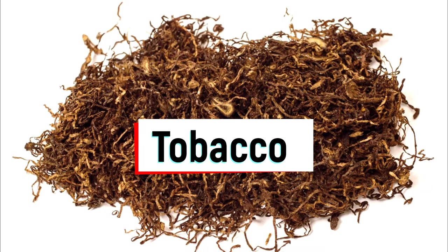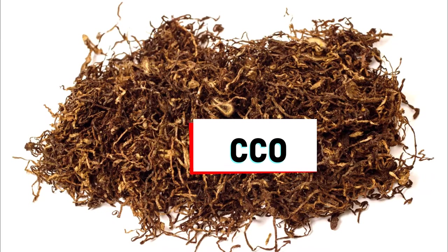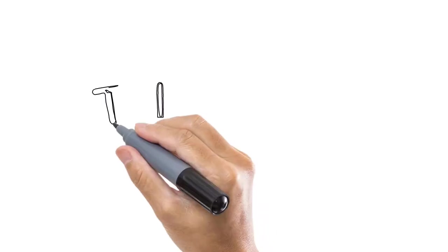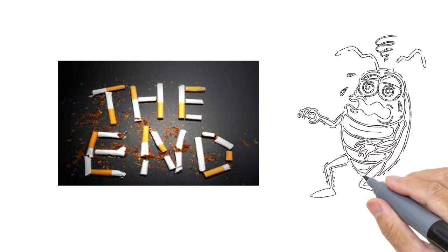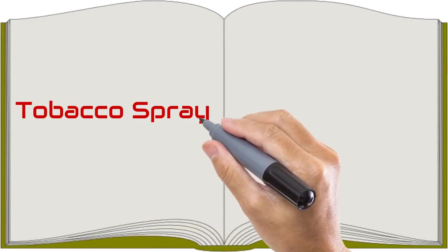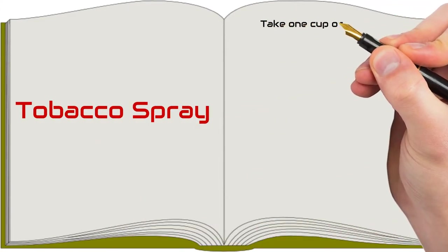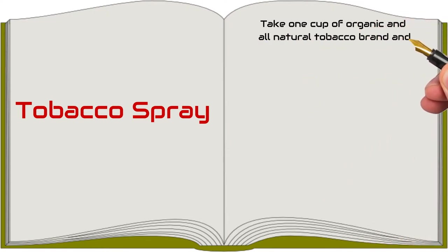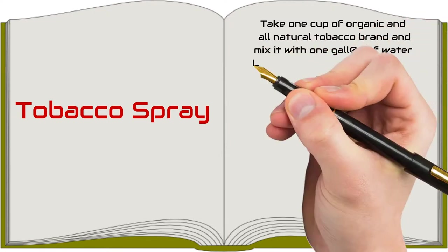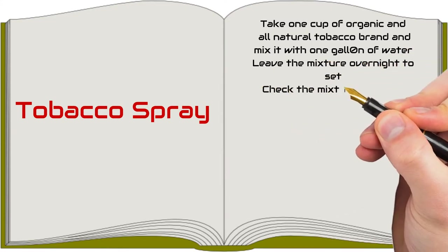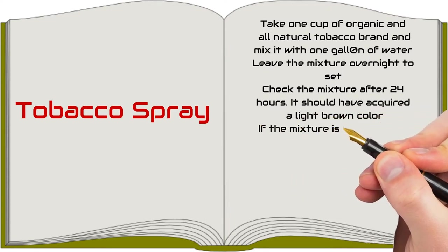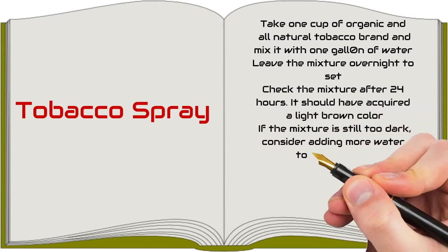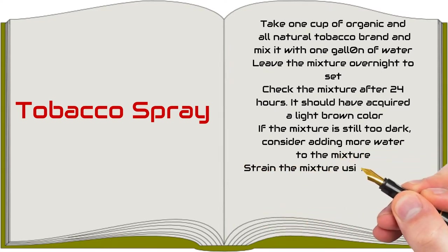Tobacco is a harmful substance to human health and has the same adverse effects on pests too. Therefore, tobacco makes a great homemade pesticide that can be used to kill aphids, caterpillars, and other insects. To make the tobacco spray, you should take one cup of organic and all-natural tobacco brand and mix it with one gallon of water. Leave the mixture overnight to set. Check the mixture after 24 hours. It should have acquired a light brown color. If the mixture is still too dark, consider adding more water to the mixture. Strain the mixture using a strainer, then put it in your spray bottle.